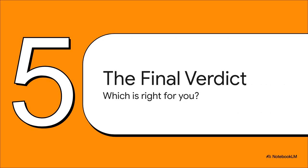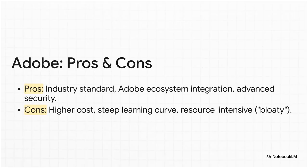After breaking down features, usability, security, and price, it's time for the final verdict. Starting with the Titan, Adobe Acrobat — its biggest strengths are undeniable. It's the industry standard, so you never have to worry about compatibility. If you're already deep in Adobe's Creative Cloud, the integration is seamless. And for high-level security and compliance in fields like law, it's simply unmatched. The downsides are just as clear: it costs a lot more, it has a steeper learning curve, and it can be slow and demanding on your computer.